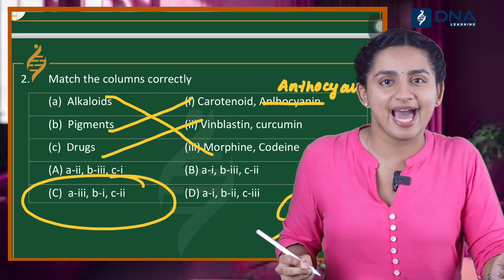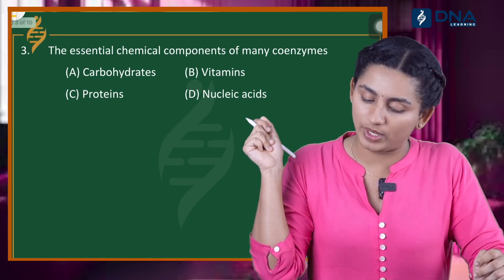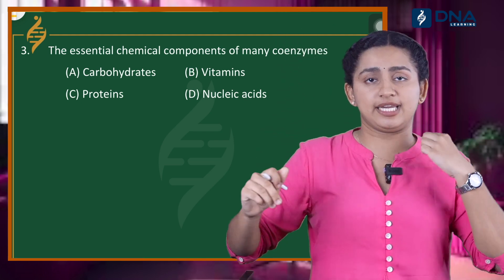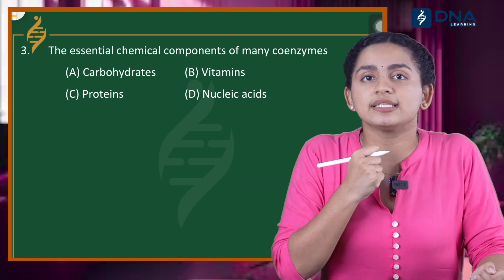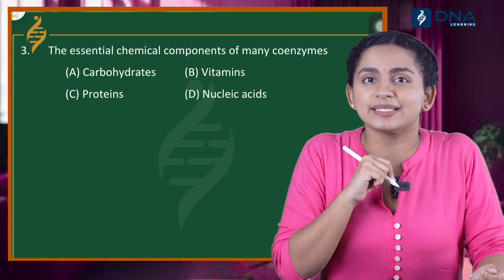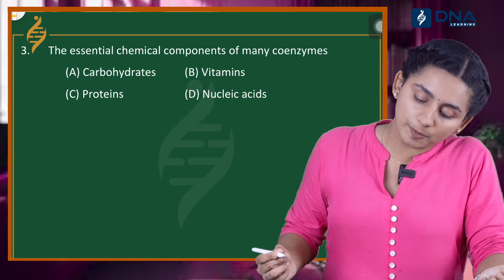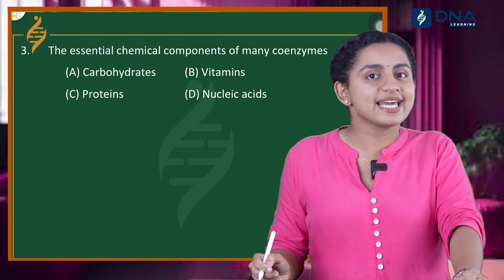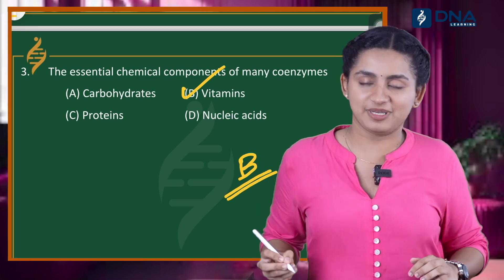Option C is the right answer. Question number 3: Essential components of many coenzymes. We have coenzymes such as FAD and NAD. The options are: Option A, carbohydrates; Option B, vitamins; Option C, proteins; Option D, nucleic acid. The correct answer is Option B, vitamins.